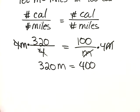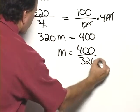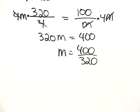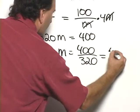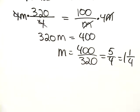Now we divide both sides by 320, so we have m is equal to 400 divided by 320, and when we simplify that, it is equal to 5 fourths, which we can also write as 1 and 1 fourth, and remember this is miles.